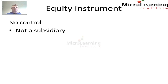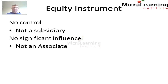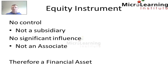Firstly, we're told that this equity investment doesn't give Epsilon any control, so consequently it's not a subsidiary arrangement and we won't consolidate. We're also told that this equity investment doesn't provide any significant influence in the listed entity. So consequently it's not an associate and we won't use the equity method. As a result, we must have a financial asset.